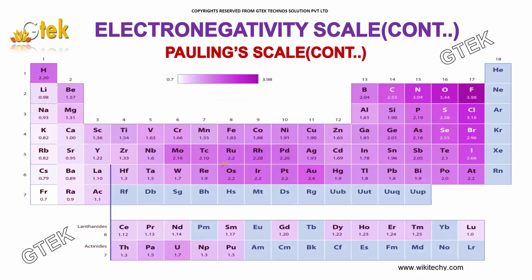The first one is Pauling's scale. I want to talk about this one in detail. The color shows the value of the electronegativity — this bright color over here has more electronegativity when compared to the whitish one.